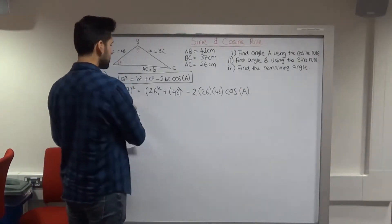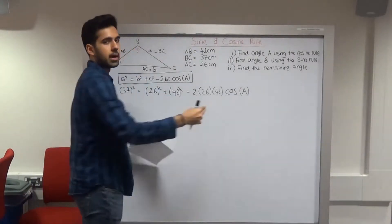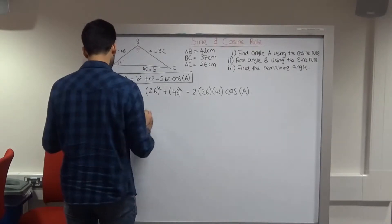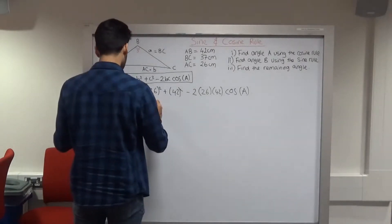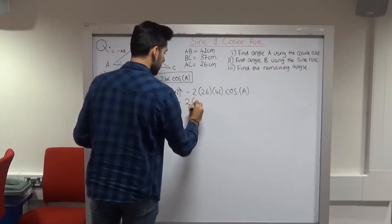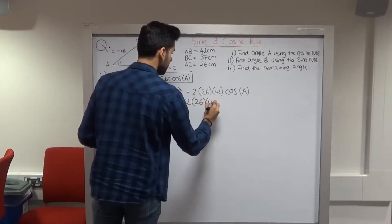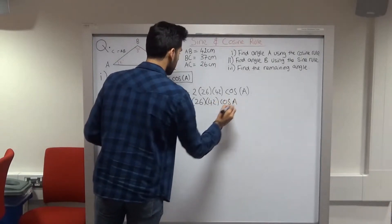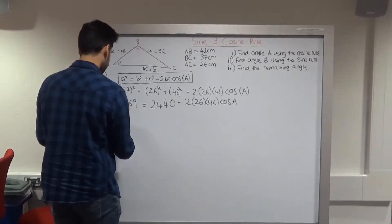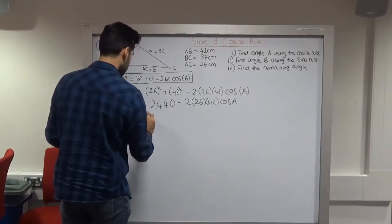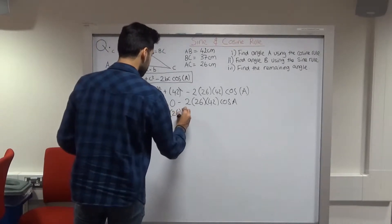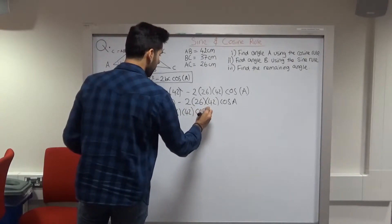The next step is to expand everything and isolate cos(A). So 37² = 1369, and 26² + 42² on your calculator gives 2440. So we have: 1369 = 2440 − 2(26)(42)·cos(A). The next step is to subtract 2440 from both sides, giving: 1369 − 2440 = −2(26)(42)·cos(A).